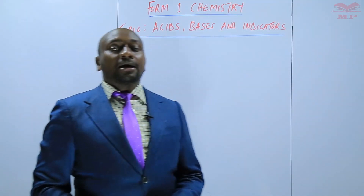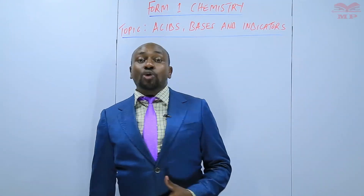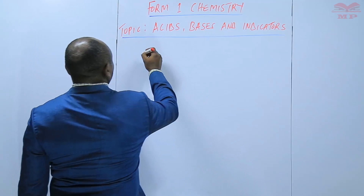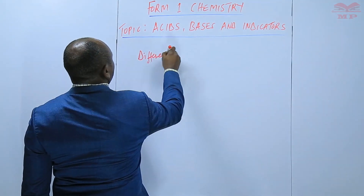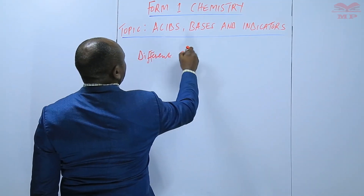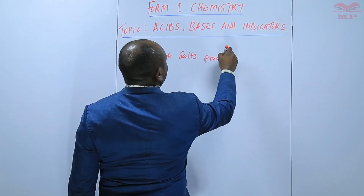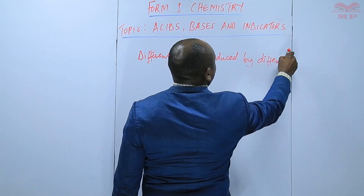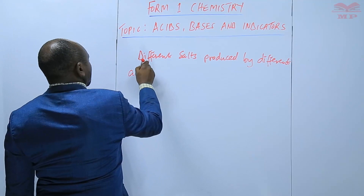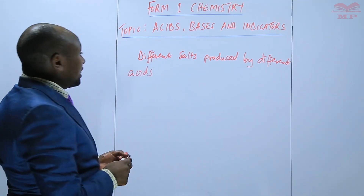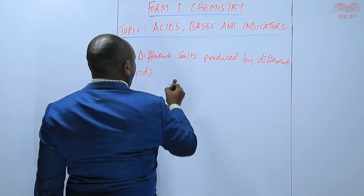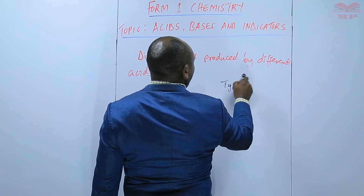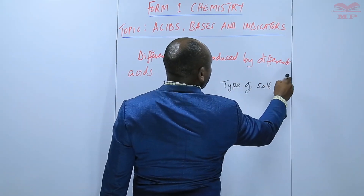So today we are going to look at different salts that are produced by different acids. We have a table where one column has the acids and another column has the type of salt each acid forms.